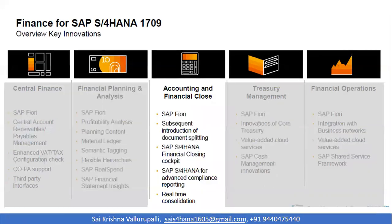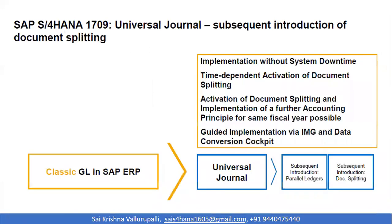Moving to accounting and financial close, SAP Fiori is again the core functionality behind the financial close. Document splitting and parallel ledgers have been introduced and can be used retrospectively. The implementation of the universal journal can be done with no system downtime. Previously, when the classic GL was moved into the universal journal, there was no option to introduce parallel ledgers or document splitting because the classic GL did not have these functionalities. But with S4 HANA 1709, parallel ledgers and document splitting can now be introduced and activated.